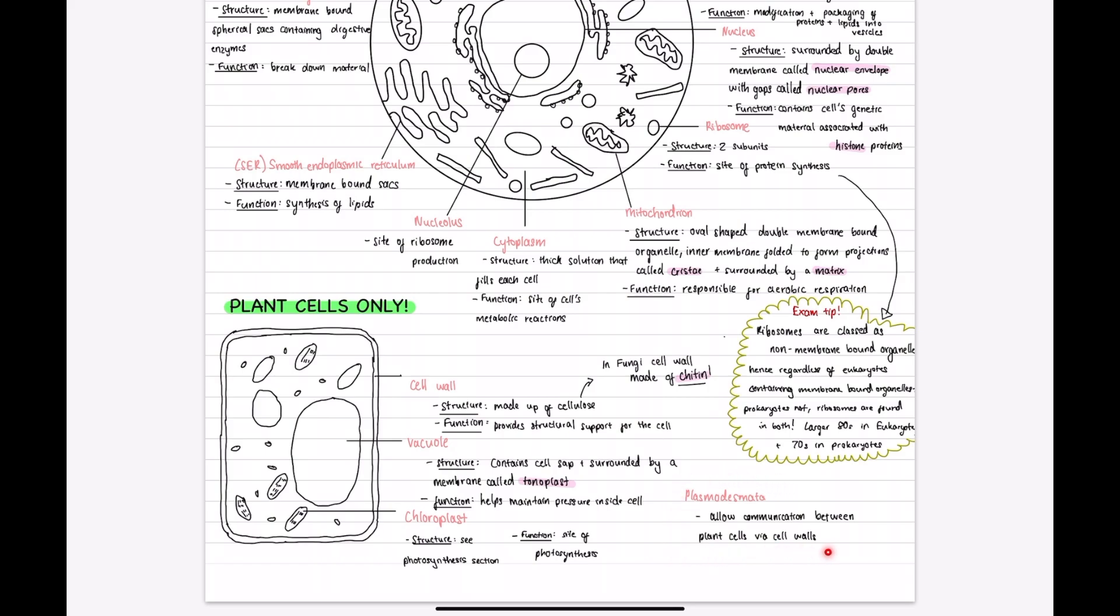Finally, the plasmodesmata are small gaps between the cell walls of plant cells to allow for communication between them.